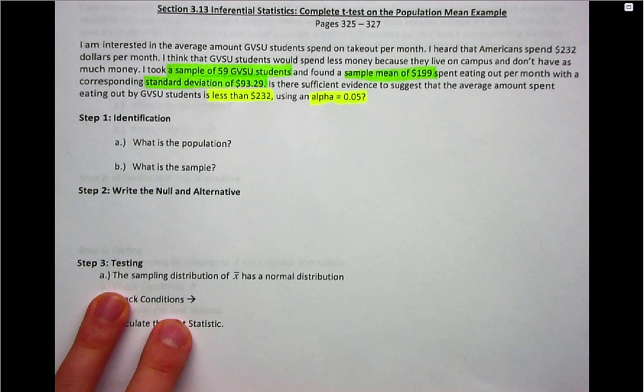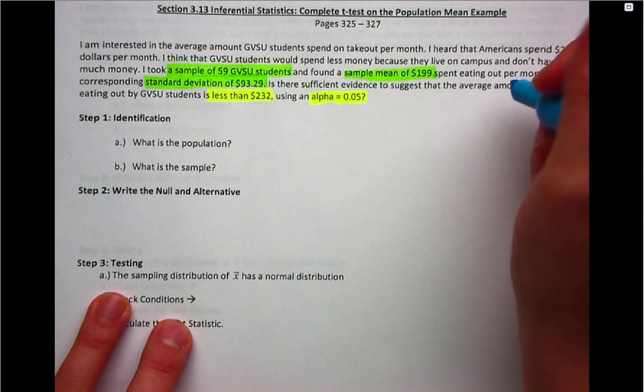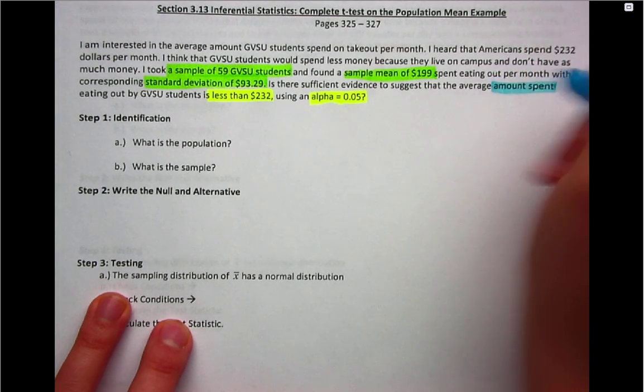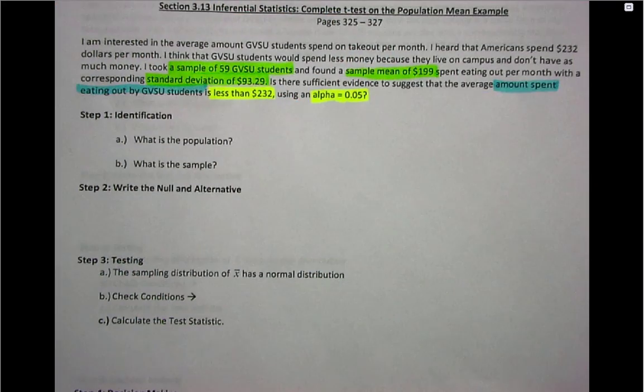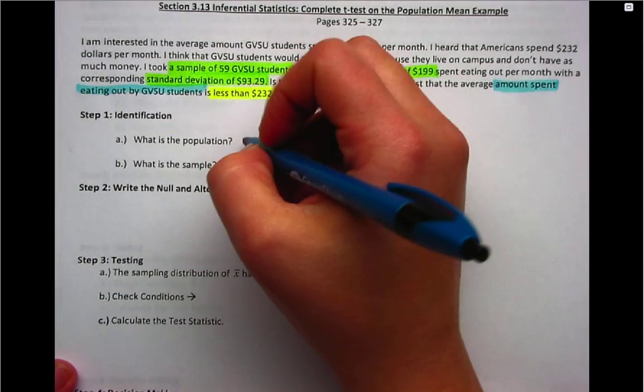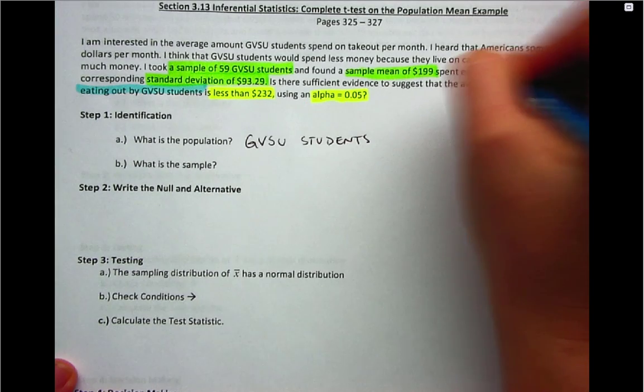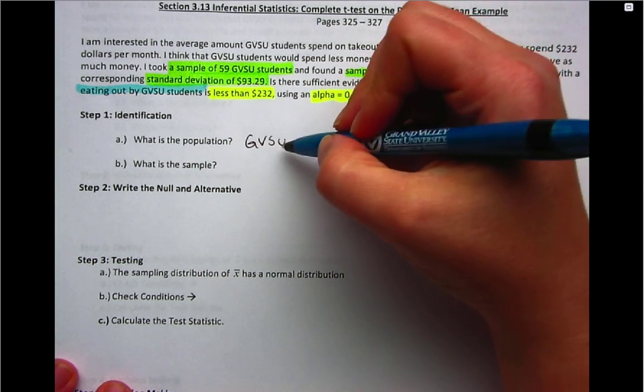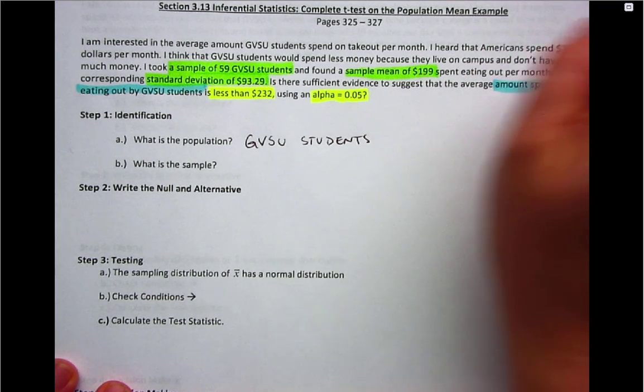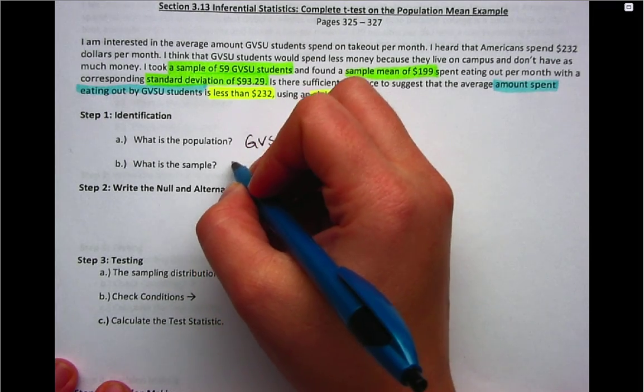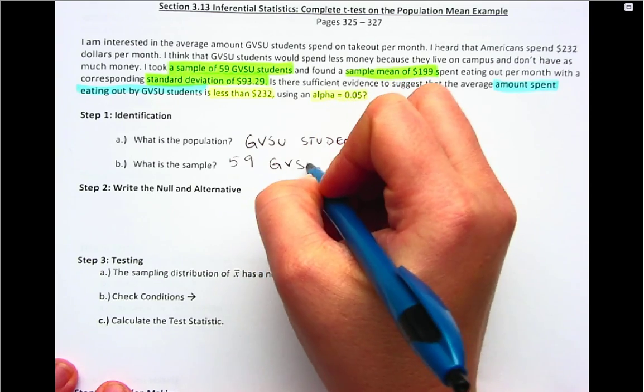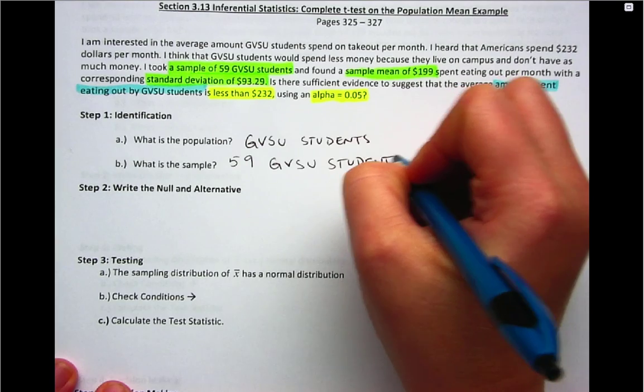The last thing that we need is information on what we're measuring and the group we're measuring it for. Who am I going to make an inference on, and what variable are we going to be using to make that inference? We're interested in amount spent eating out, and our population is GVSU students. That's going to help us write our parameter or make our inference in step five. When we start, our population here is going to be all GVSU students. I know it says information on Americans, but the group that we want to be able to make the inference on is GVSU students. The Americans is just giving us our status quo or our null hypothesis.